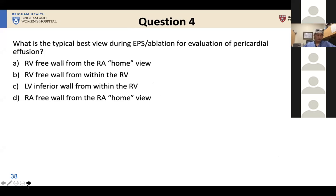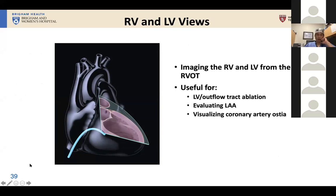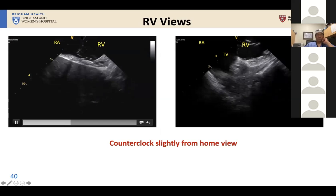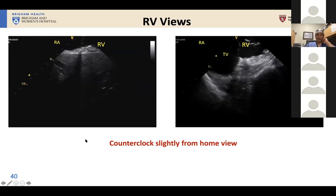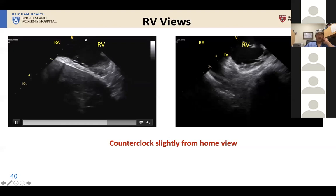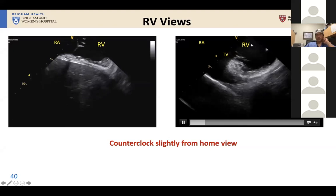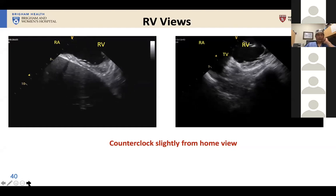That gets us to the next view — we're starting to move beyond the home base of the right atrium to what I'd call ICE 102. We can see things when we get the catheter into the RV — not just the RV and LV, but also the outflow tract, the left atrial appendage, and even the coronary ostia. You start out in your home view, then counter-clock a little so you see the tricuspid valve right in front of you. Then, as you slowly advance forward, you'll see yourself cross the tricuspid valve.